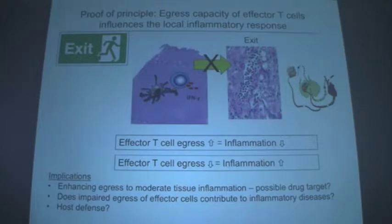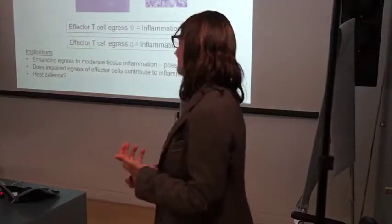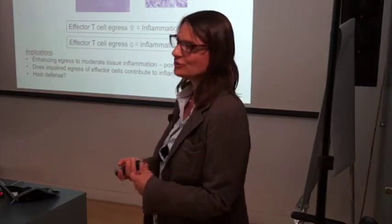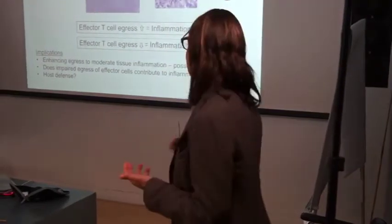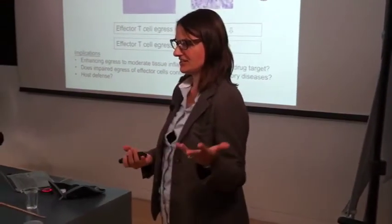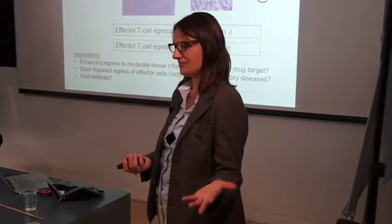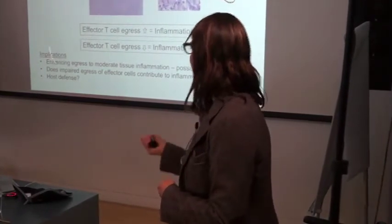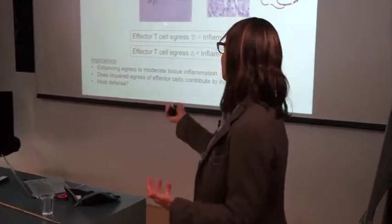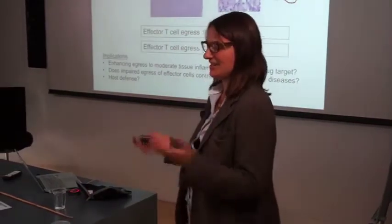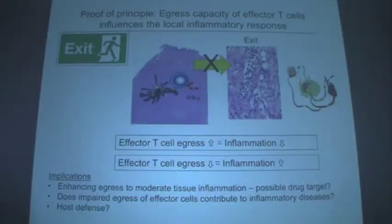There are several implications. Anything that enhances egress from the site is expected to ameliorate inflammation — so molecules mediating retention in the tissue could be therapeutic targets. If some individuals have impaired egress of effector T cells, that could promote enhanced inflammatory responses. And this pathway is probably designed for host defense — ensuring that while antigen remains, meaning an active infection, T cells stay and do their job rather than disseminating before clearing the infection. There's a lot to follow up on.